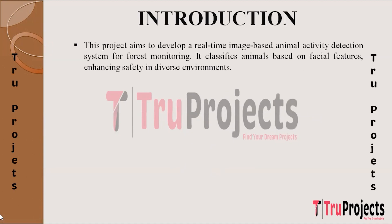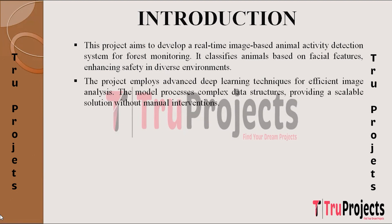The project centers around the development of an innovative animal activity detection system, primarily focusing on image analysis, addressing challenges associated with cluttered backgrounds and diverse wildlife structures. The initiative aims to create a robust framework for detecting and classifying animals based on facial features, noses, bodies, and tails. This technology is tailored for application in forest regions, providing a solution for real-time monitoring of animal activities in images, leveraging advanced deep learning techniques and neural network architectures.